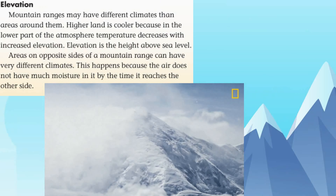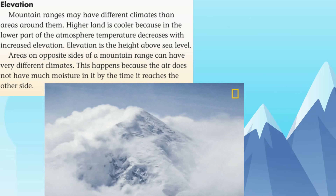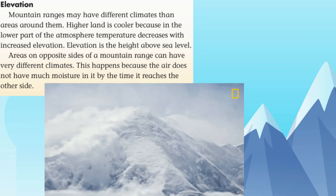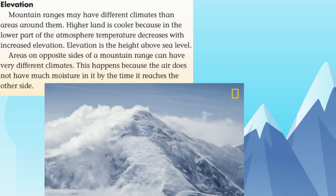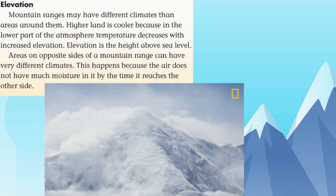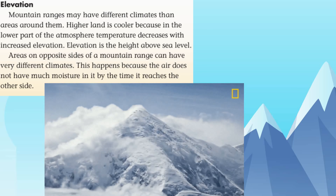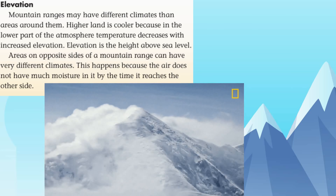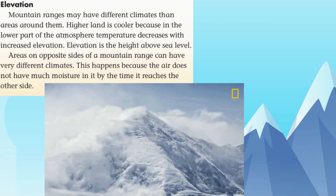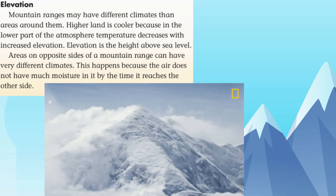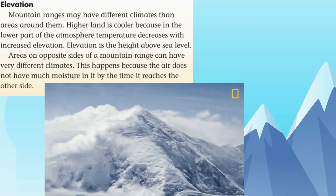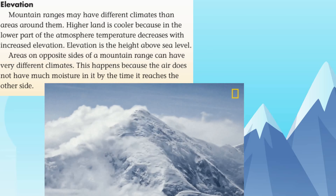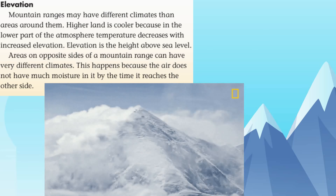Elevation is another factor affecting climate. Mountain ranges may have different climates than the areas around them. Higher land is cooler because in the lower part of the atmosphere, temperature decreases with increased elevation. Elevation is the height above sea level. Areas on opposite sides of a mountain range can have very different climates because the air does not retain much moisture by the time it reaches the other side.